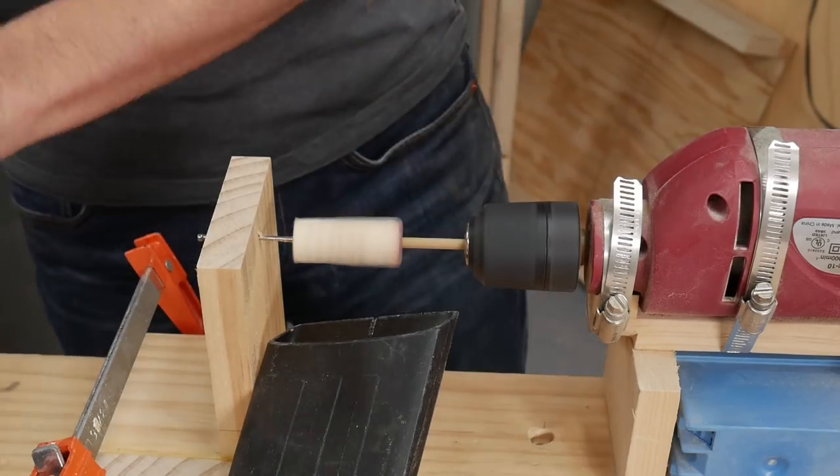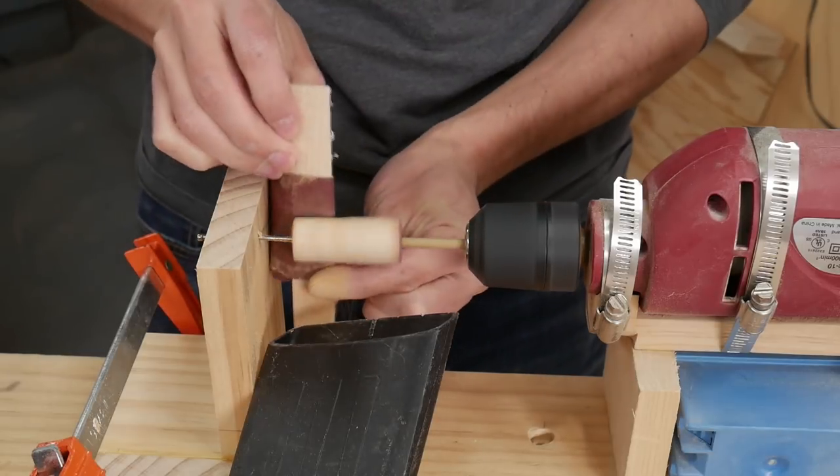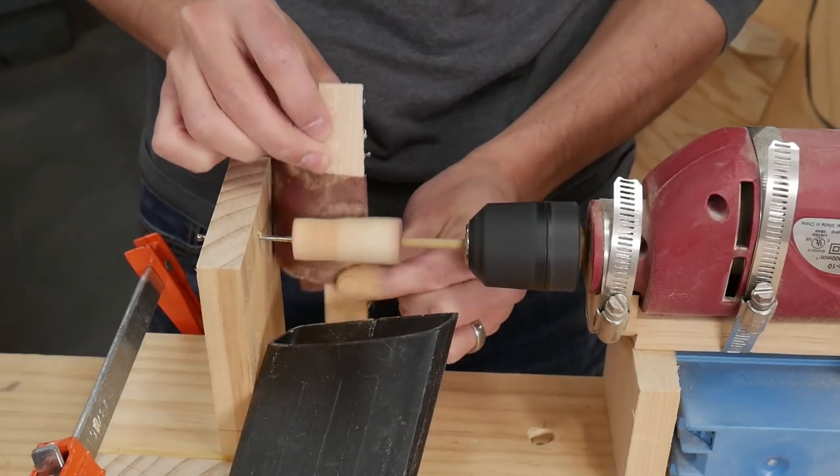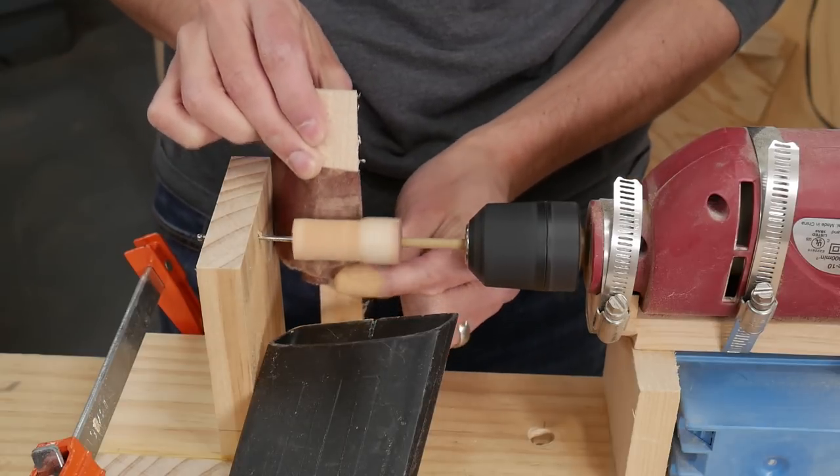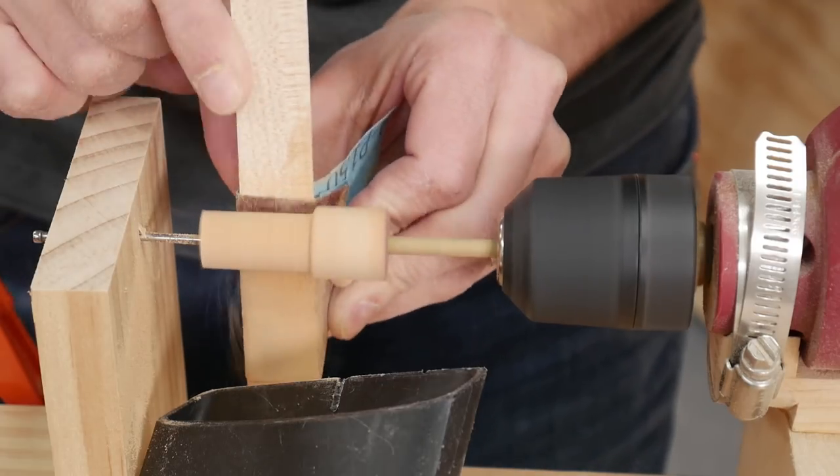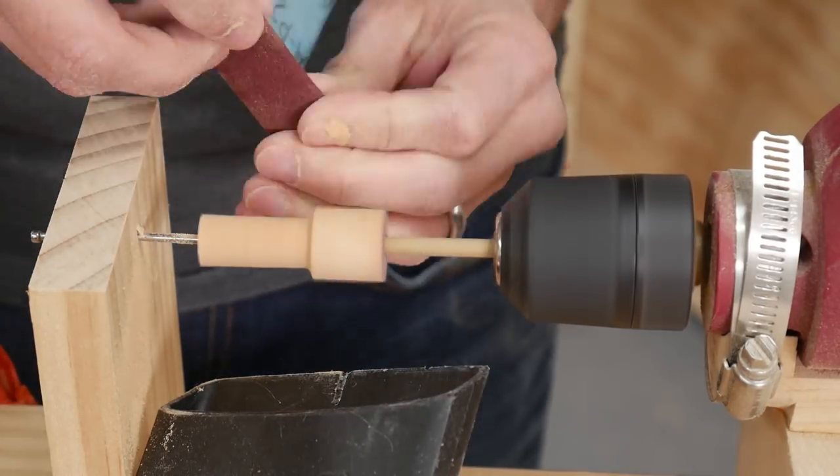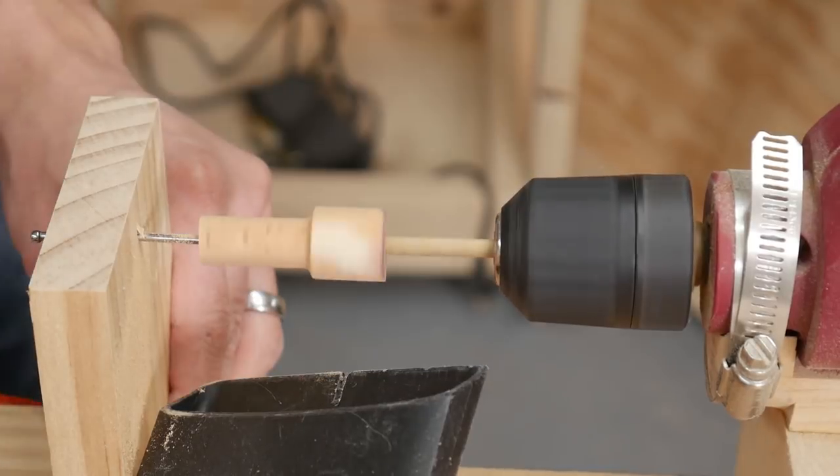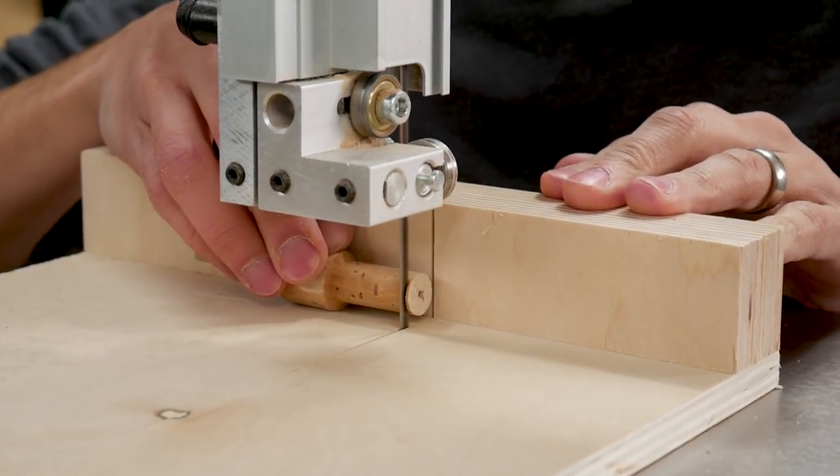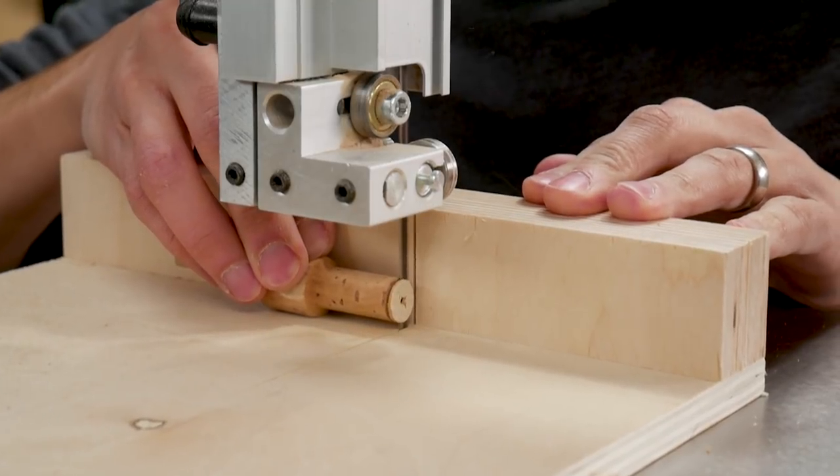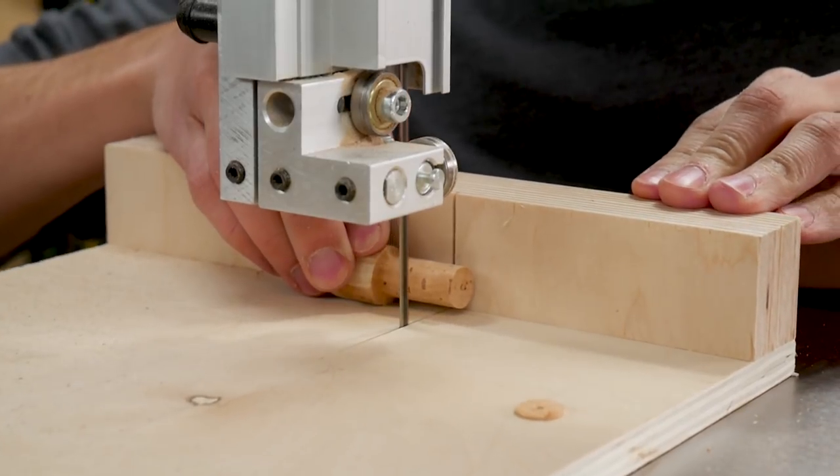I put another cork on the lathe and sanded it down to a small cylinder. I took this over to my bandsaw and cut it down to size with the help of a little sled I built. I made a video showing how I made this sled. There's a link down in the video description.